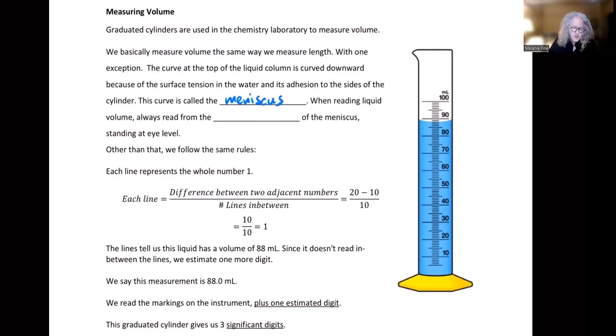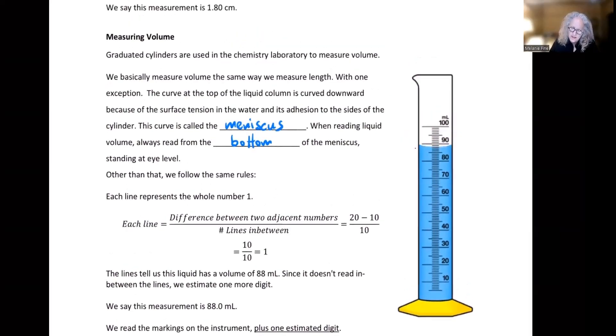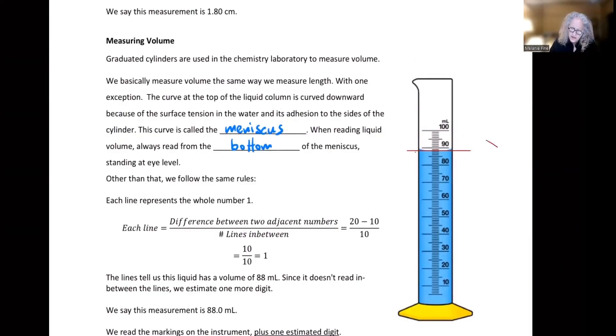When reading liquid volume, always read from the bottom, not the top of the meniscus, the bottom of the meniscus. It's at the bottom of the meniscus. We're reading that line. And you always want to read that at eye level. It will look different when you're at an angle. So you always want to read it at eye level.